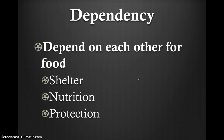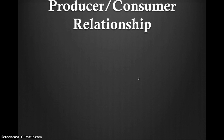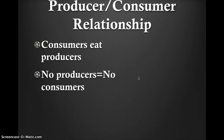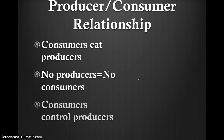Organisms depend on one another for food, and in the parasite-host relationship, protection and shelter are provided as well. In the producer-consumer relationship, consumers eat producers, so with no producers you have no consumers. No consumers can lead to several problems in the ecosystem. Consumers basically control producers and the fate of them.